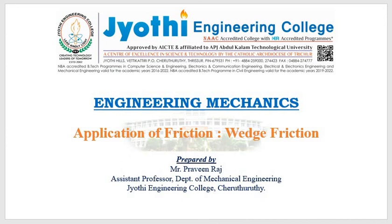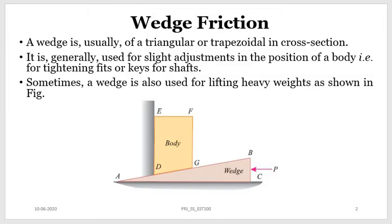Let us see what we mean by a wedge. Wedges are generally metallic or wooden pieces, usually in triangular or trapezoidal shape. The main function or use of a wedge is to lift a heavy body, or we can use it for slight modification in the position of the body — for example, when you are tightening the fits or the ease of the shaft. It can also be used for lifting heavy weight.